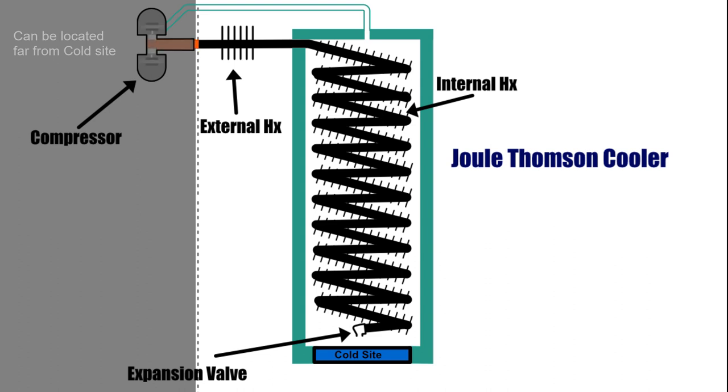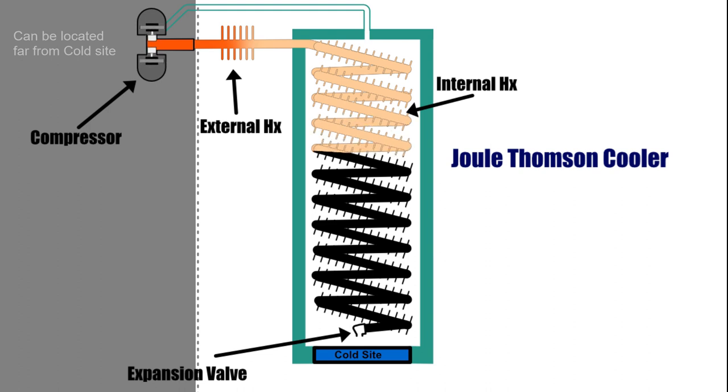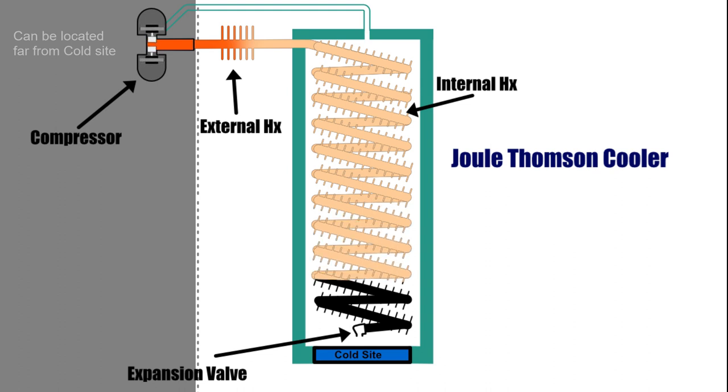High pressure gas as it leaves the compressor is partially cooled by an external heat exchanger before it enters the internal heat exchanger. After the high pressure and now partially cooled gas passes the internal heat exchanger, it will then flow through an expansion valve and into a low pressure chamber.